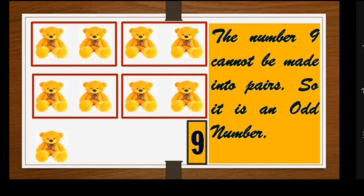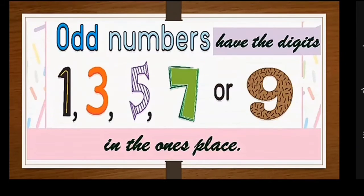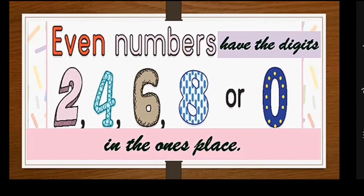Children, we also need to learn this: odd numbers have the digits 1, 3, 5, 7, or 9 in the ones place. Even numbers have the digits 2, 4, 6, 8, or 0 in the ones place.